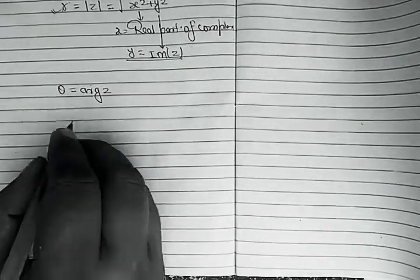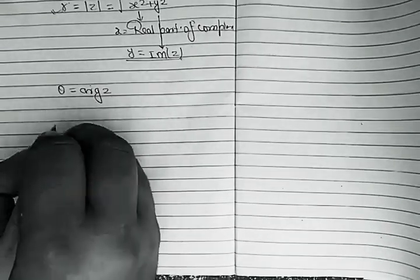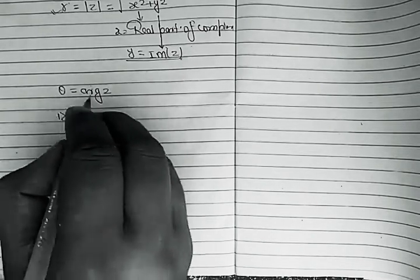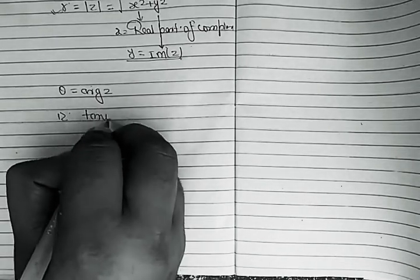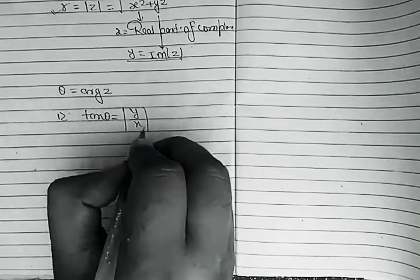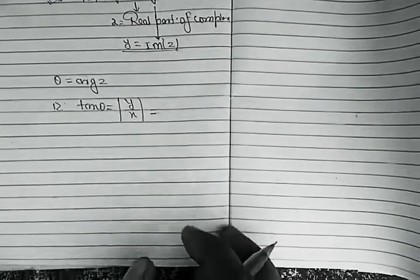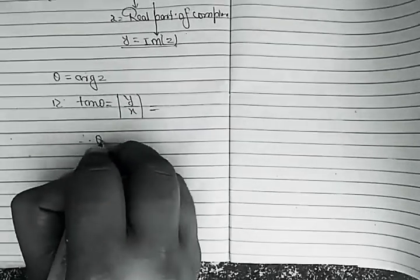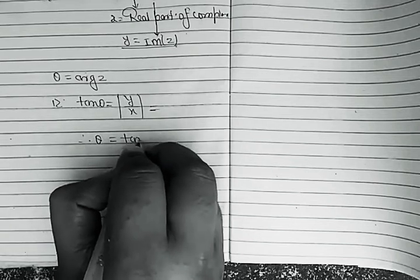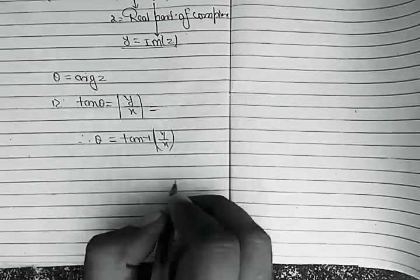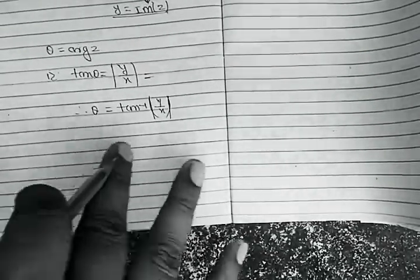The argument of z — before finding argument of z we need to calculate tan θ. tan θ equals |y/x|. So θ equals tan⁻¹(|y/x|). This is the process for finding θ.